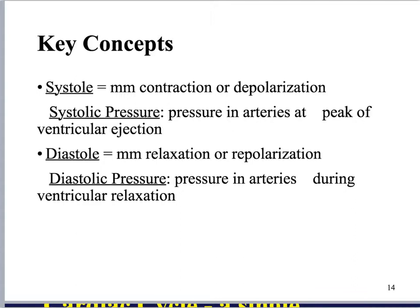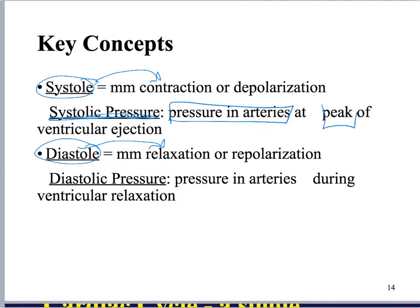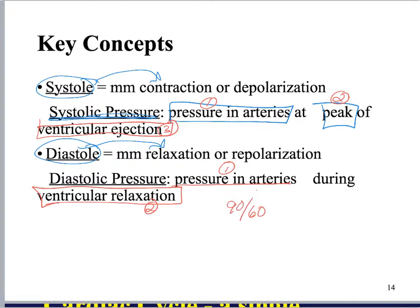I want to focus on some definitions that are constantly mixed up. Systole is referring to contraction. Diastole is referring to relaxation. Systolic pressure is the pressure in the arteries at the peak of ventricular ejection — all of those components are critical. Diastolic pressure is the pressure in the arteries during ventricular relaxation. Both of these concepts need to be in those definitions.